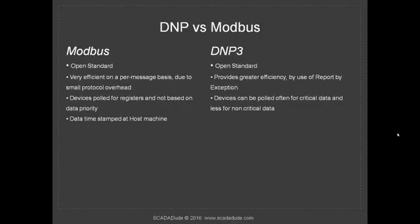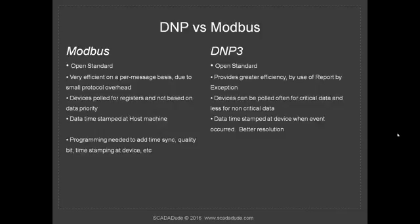With Modiverse data, when it comes to the host machine, that's where it gets the timestamp. DMP on the other hand timestamps it at the device level, which is nice because sometimes that's what you want to know — when did something go wrong or when did something happen was at the device level.